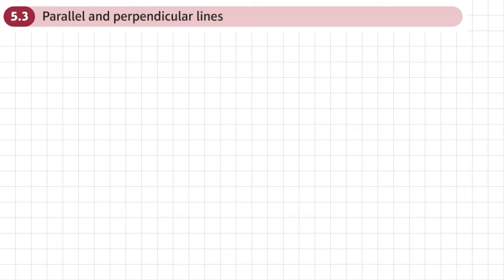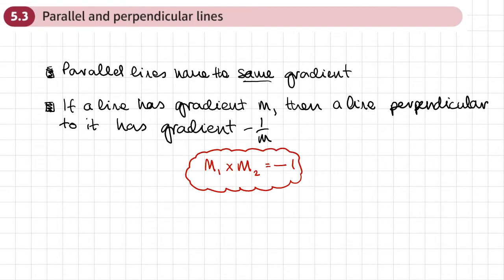This is the third section of chapter 5 on straight line graphs, and this is about parallel and perpendicular lines. There are only two bits of information we need to know. The first is that parallel lines have the same gradient. With perpendicular lines, if a line has a gradient m, then a line which is perpendicular to it has a gradient of negative 1 over m.